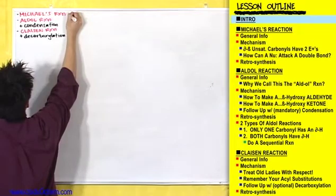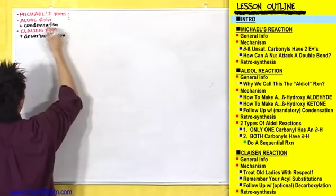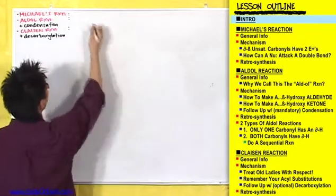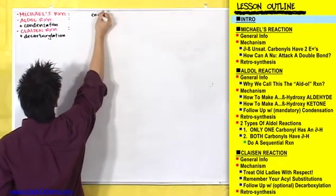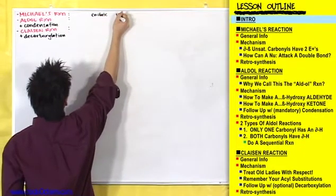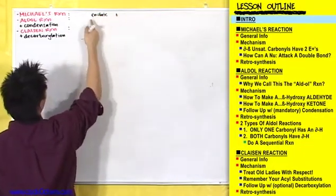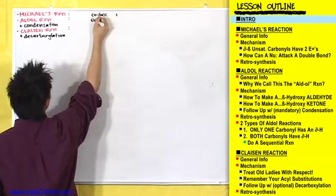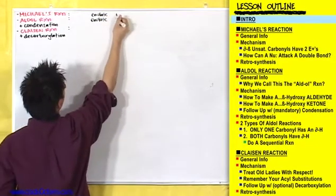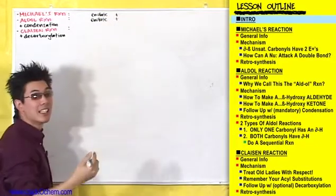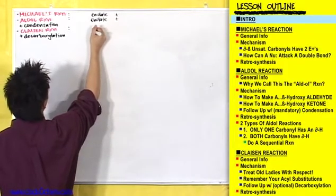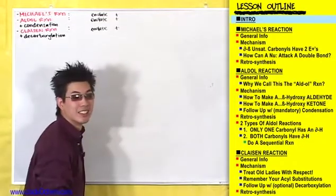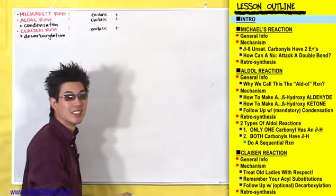Let's write these up in detail and compare them. In each one of these reactions — whether it be a Michael's reaction, an Aldol reaction, or even a Claisen reaction — all that's going to happen is that you're going to take an enolate and add it to something else. In a Michael's reaction, an enolate adds to something else. In an Aldol reaction, same thing — an enolate adds to something else. In a Claisen reaction, the same thing happens. We're going to find out what these 'something else's' are in just a second.